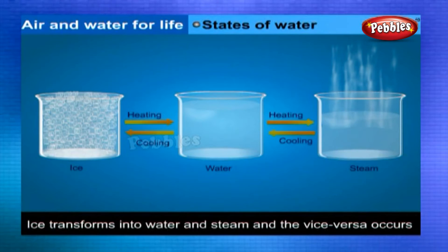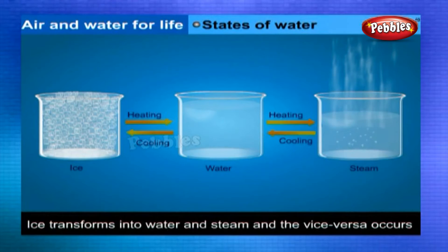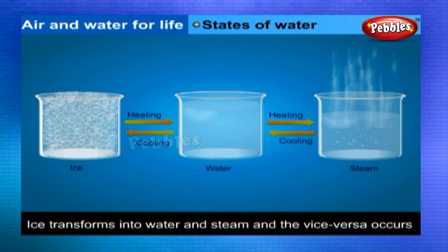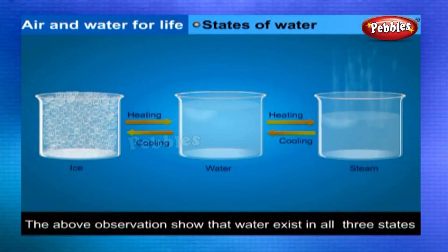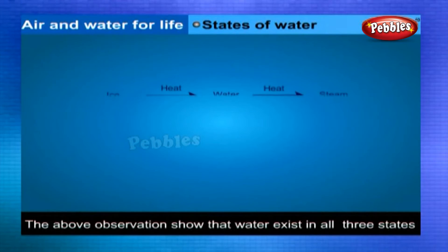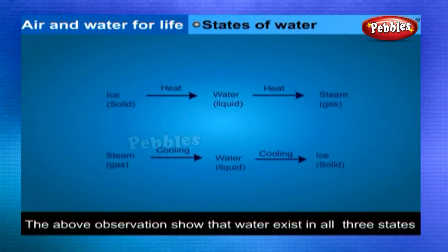Can this process be reversed? Yes. If we cool steam (gas), we get water (liquid). If water (liquid) is kept in a freezer, it changes into ice (solid). This shows that water can exist in all three states, and a change in state can be brought about by changing the temperature or pressure.